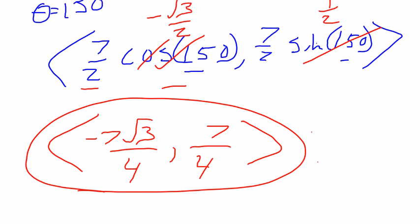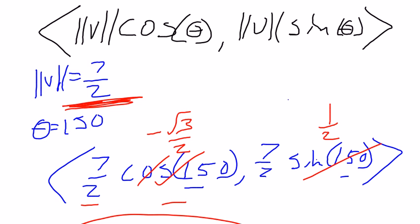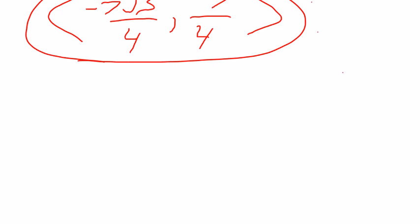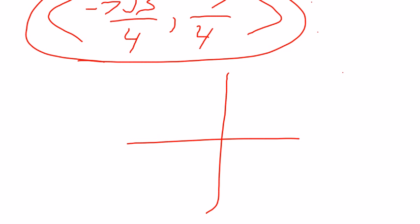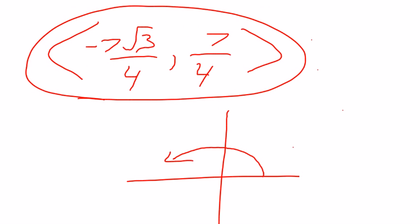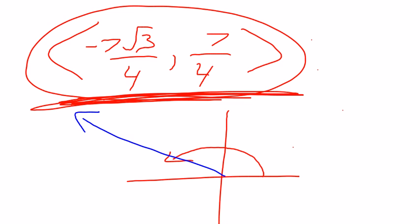This is now a vector that is 7 halves units long and has a direction angle of 150. A direction angle of 150, well, that should put it right into this quadrant. Does this look like a vector that would be in the second quadrant that would have about a 30 degree angle to 180? I think it sure does.